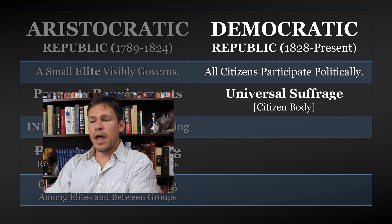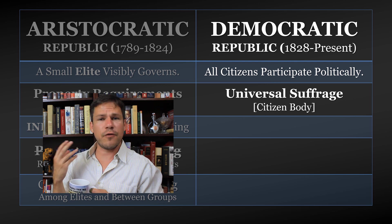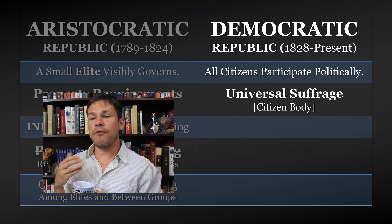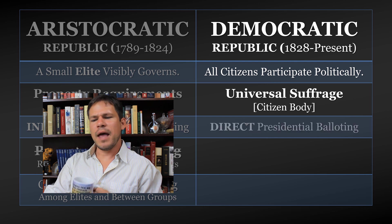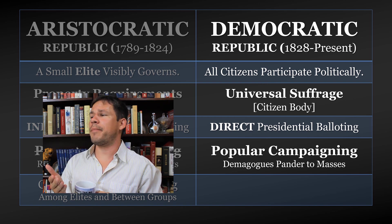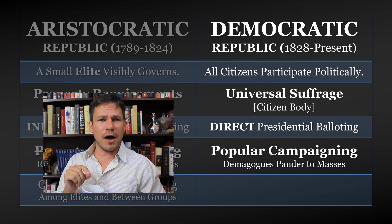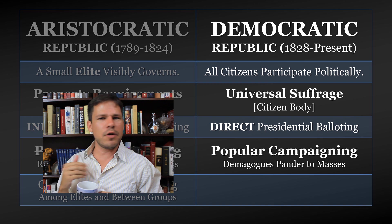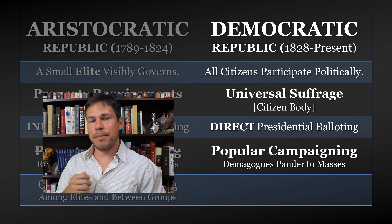In a democratic republic — which I've arbitrarily said runs from 1828 to present, even though the aristocratic republic certainly does not just go away — all citizens participate politically. There is universal suffrage in the citizen body. Of course, the definition of the citizen body has changed quite a bit since the antebellum period. After the Civil War, it was inclusive of men of color; after World War I, it becomes inclusive of women. So American democracy gradually developed, but it developed most quickly during this time.